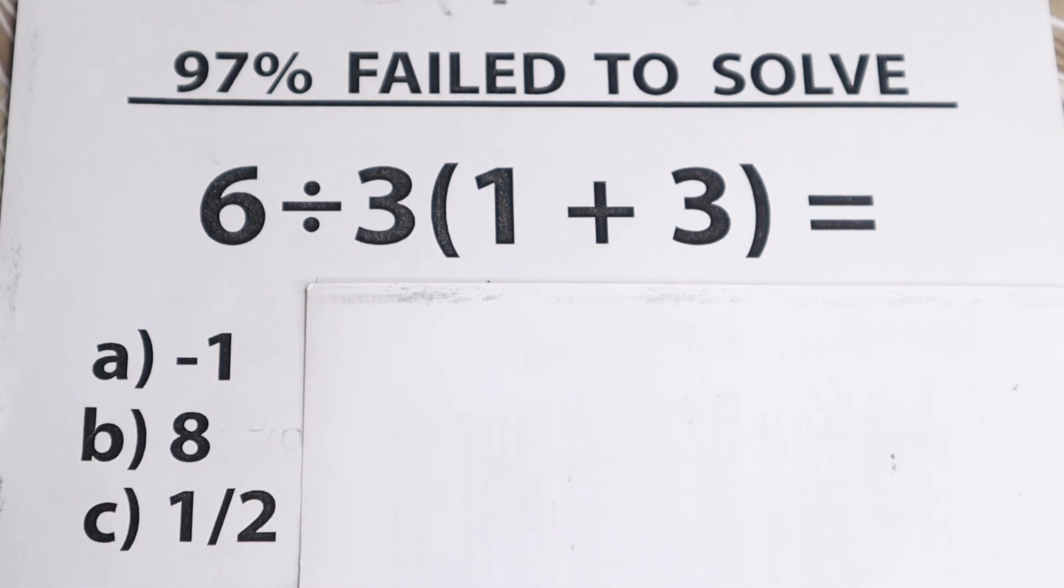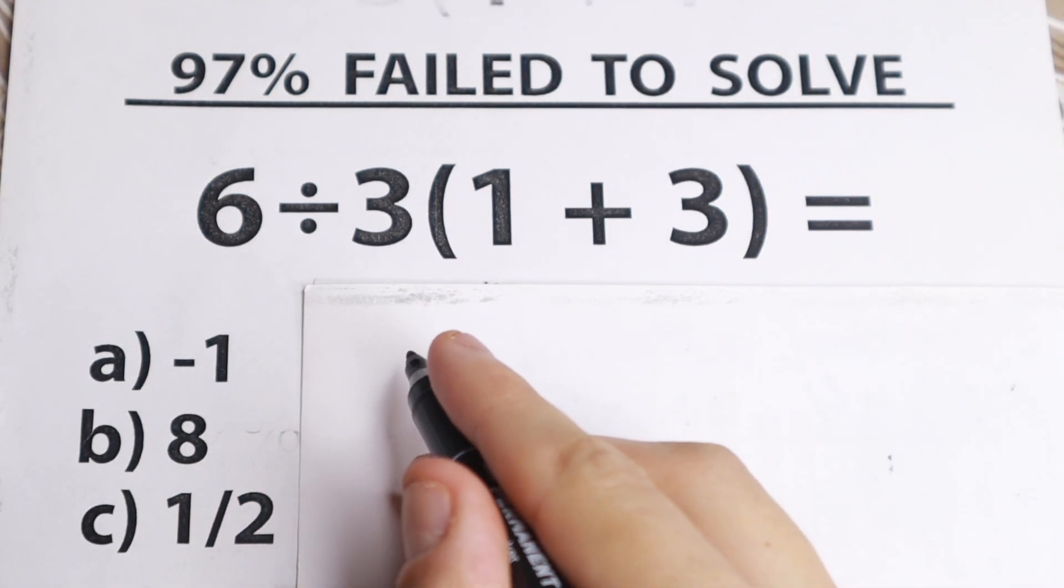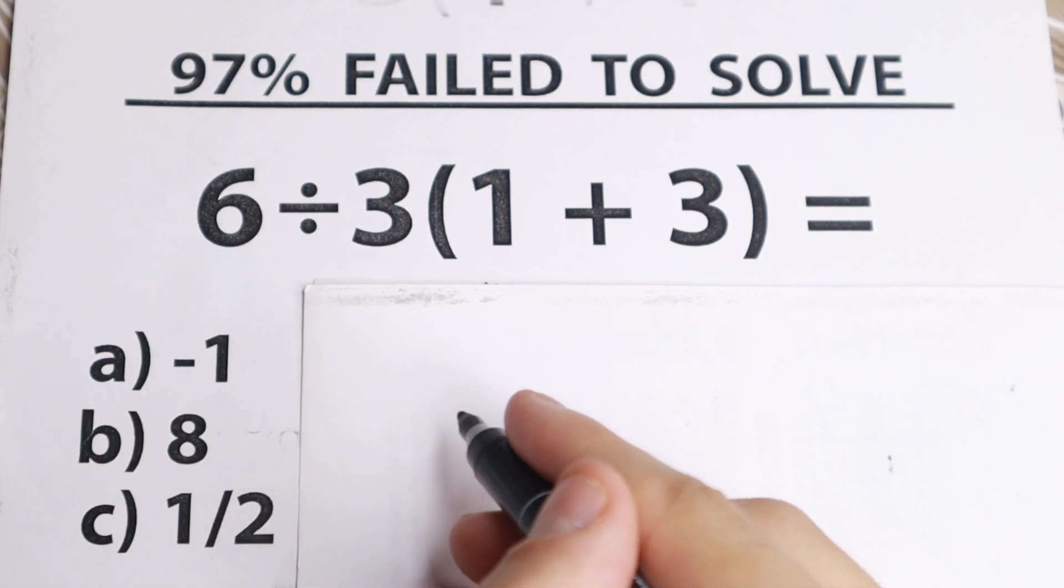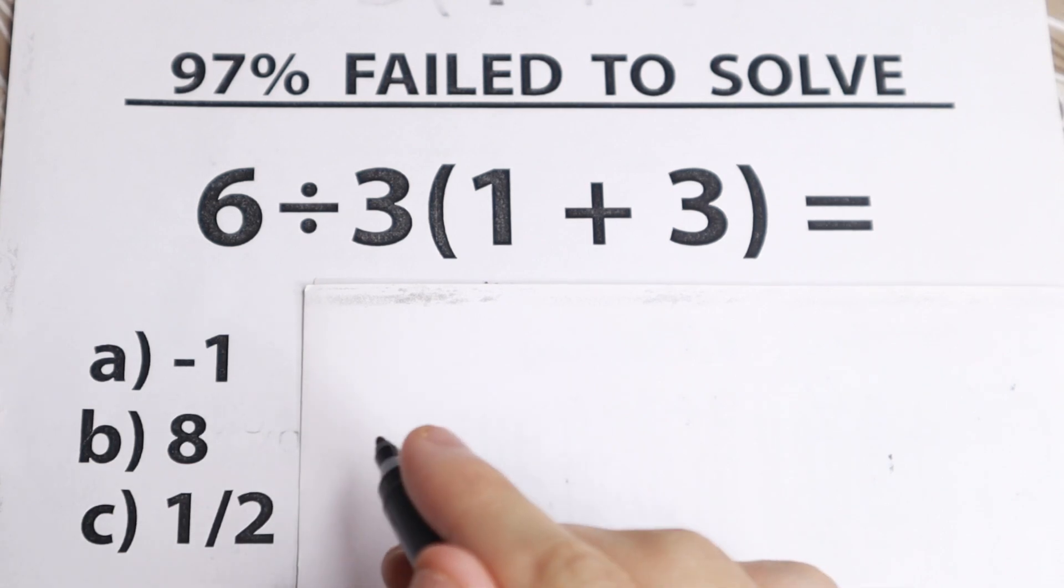We have 6 divided by 3 and in parentheses we have 1 plus 3. And of course on the left hand side we have a lot of options. So right now I suggest you pause the video and try to solve it by yourself. And of course after 60 seconds you'll be surprised because your answer will be correct or wrong.